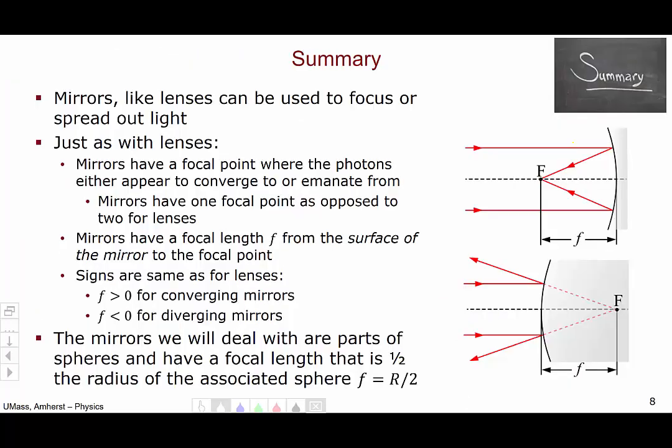So, in summary, mirrors, like lenses, can be used to focus or spread out light. Just as with lenses, mirrors have a focal point where the photons either appear to converge to or emanate from. However, mirrors only have one focal point as opposed to two for lenses, which is basically due to the fact that you can't shine light through a mirror.